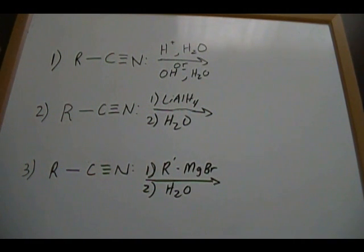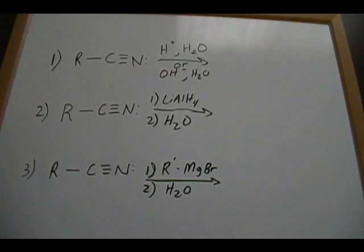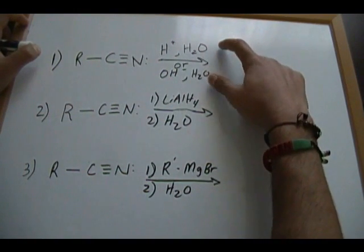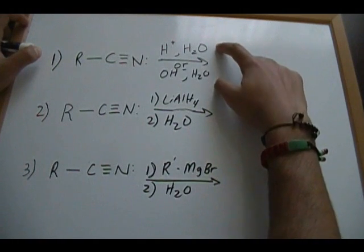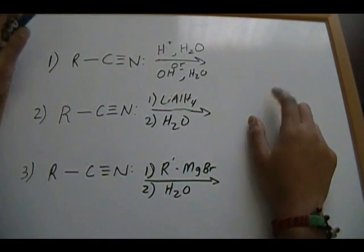The first reaction: we have a nitrile reacting with water under acidic conditions, or water under basic conditions. It doesn't really matter which case we're dealing with — you'll form the same product in either case. The product is going to be a carboxylic acid. If you've seen my other acid derivative videos, you'll know that water under acidic or basic conditions is a reagent associated with forming carboxylic acids.